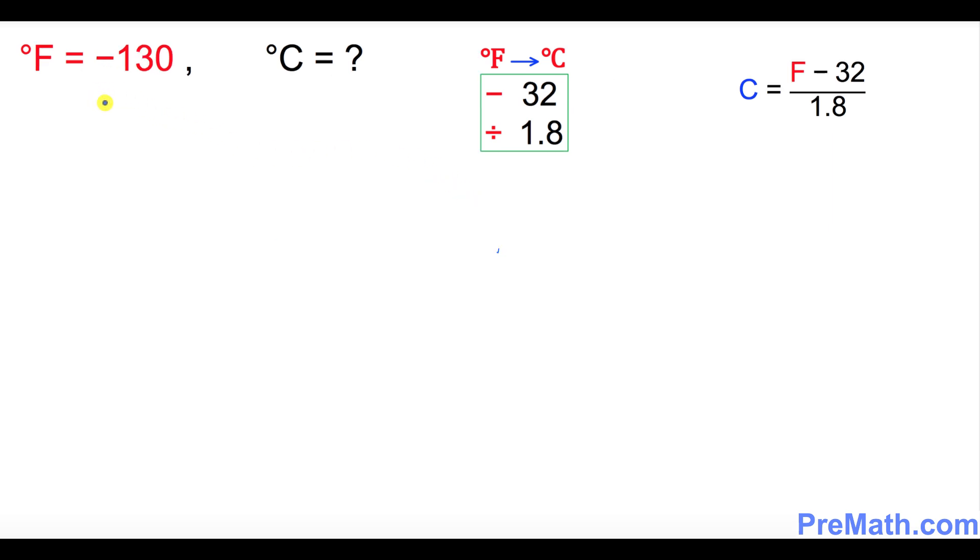And this time our F value is negative 130. We want to convert it to C, so I want you to first subtract 32 and that's going to give you negative 162. The next step is divide by 1.8, that's going to give you negative 90.